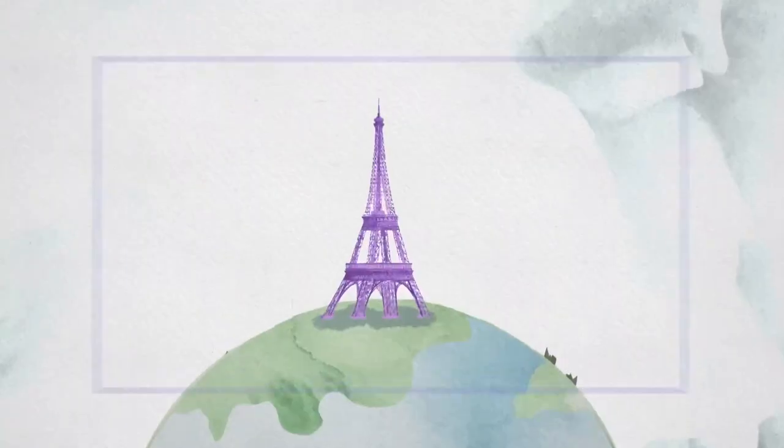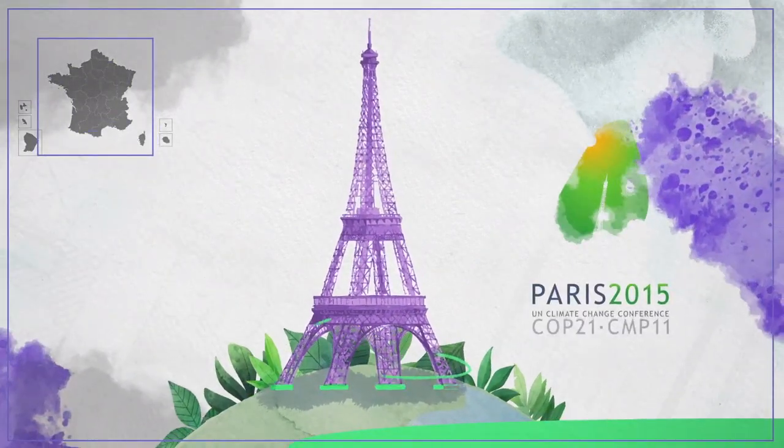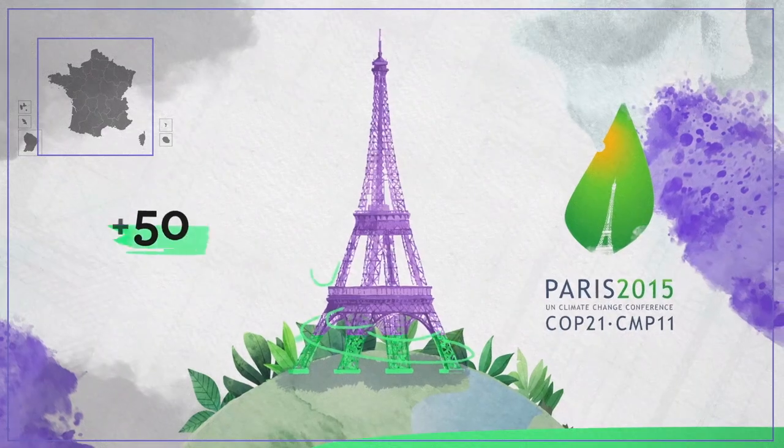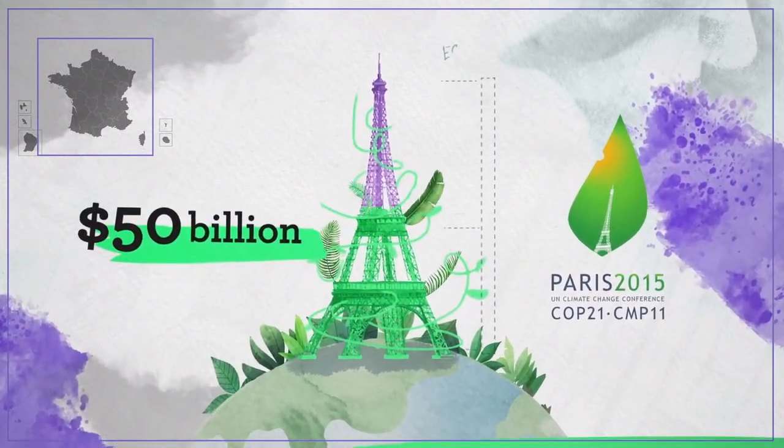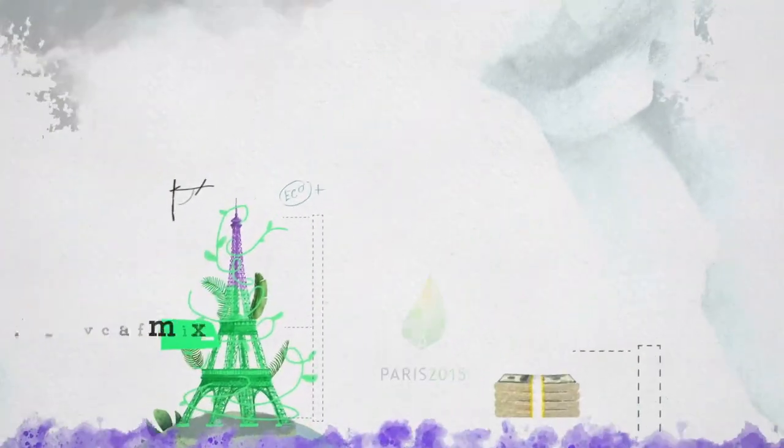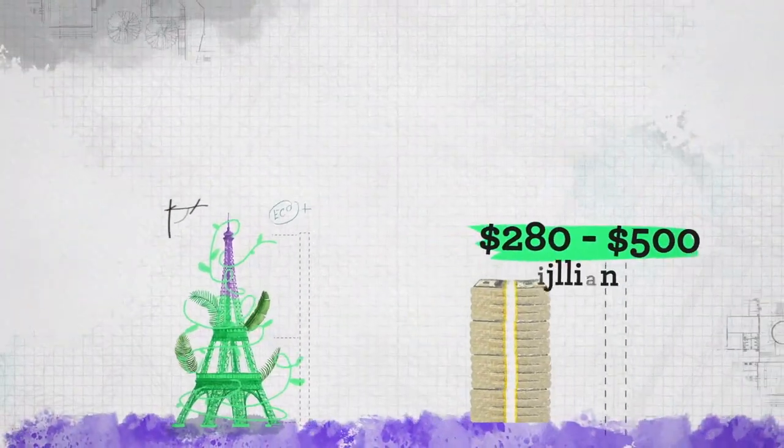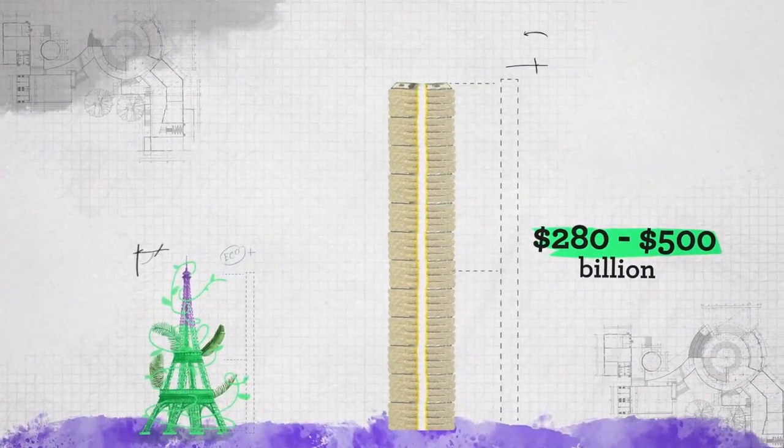Developed countries, under the auspices of the symbolic Paris Agreement, have committed to mobilize $50 billion annually to finance the green transition for developing countries. But according to the United Nations, $280 to $500 billion is needed by 2050 in order for effective change to happen.